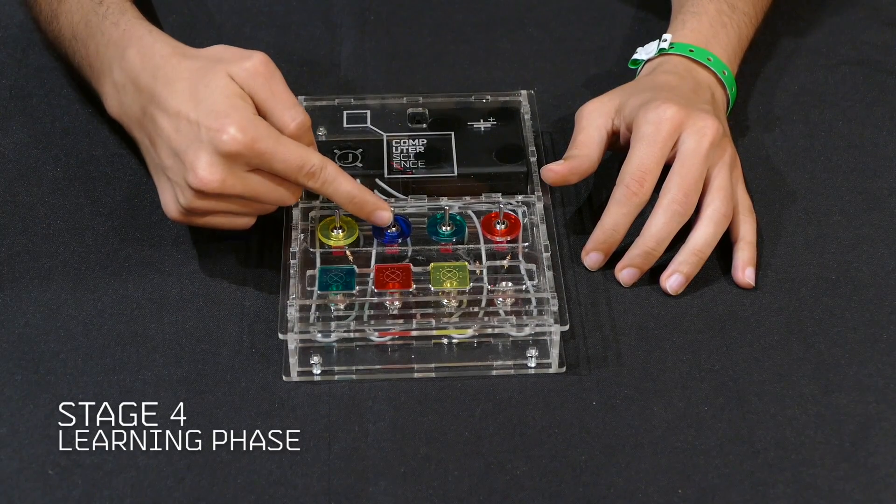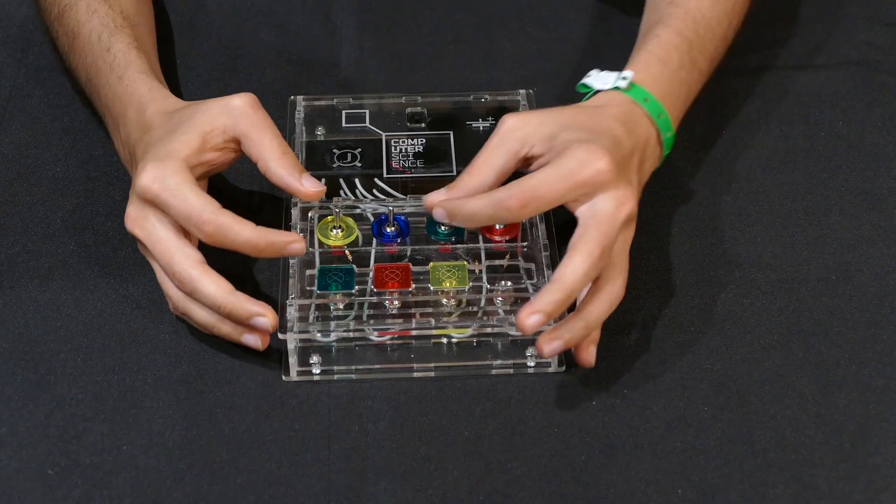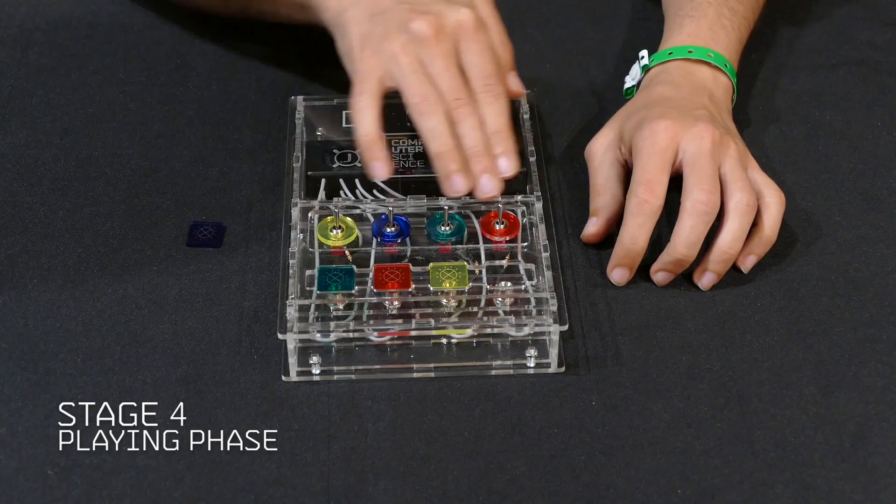During the next stage the first flicked switch will not power any light but will rather tell the device which light has no color. The three remaining switches will still power the lights defined in the previous stage.